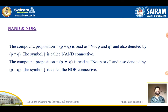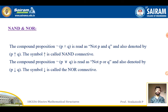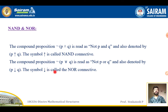First, we will define NAND and NOR. The compound proposition 'negation of P and Q' is read as 'NAND P and Q' and is denoted by the symbol P NAND Q — the upward arrow symbol is called the NAND connective. The compound proposition 'negation of P or Q' is read as 'NOR P or Q', also denoted by P NOR Q — the downward arrow symbol is called the NOR connective.